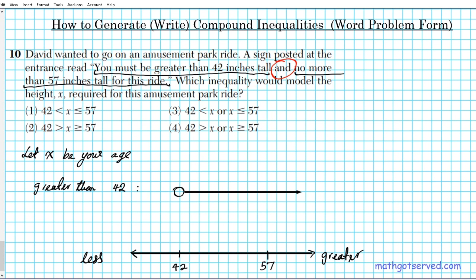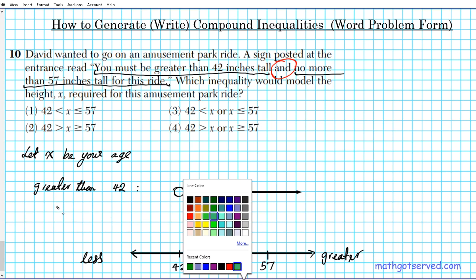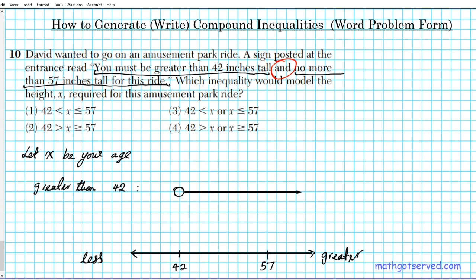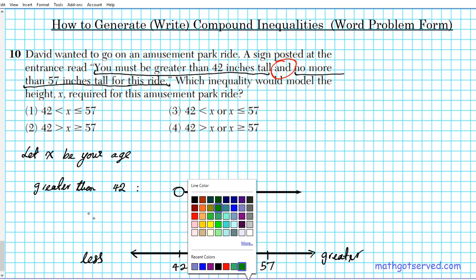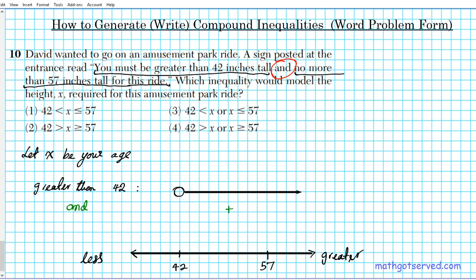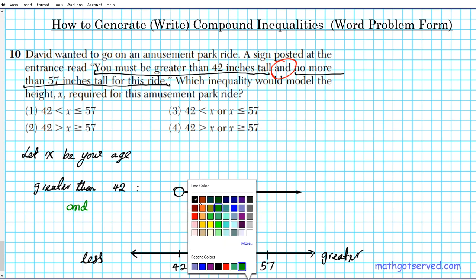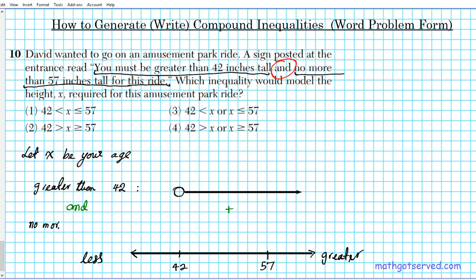And we're going to combine this with another inequality, no more than 57 inches. If there's no more, that means it has to be 57 or less. So it can be 57 or less. So this is 57 right here, close circle. So anything that's 57 or smaller. Less is what direction, less means you're going to the left.